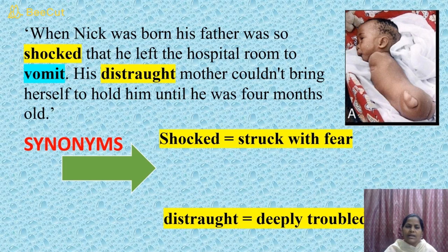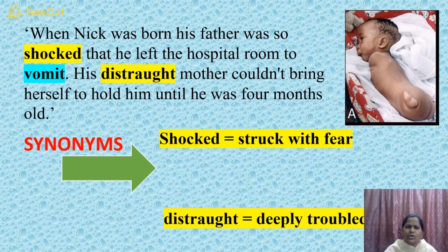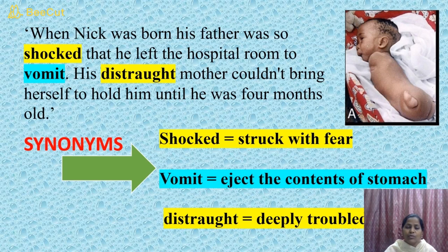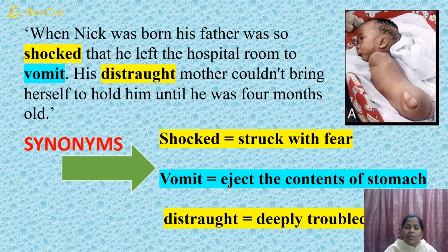Look at the meaning of the words 'shocked' — struck with fear — and 'vomit' — to eject the contents of the stomach. When Nick was born, his father was so shocked. Why should a father be shocked when a child is born? He left the hospital room to vomit, meaning what he had eaten came out of his mouth because he could not digest looking at newly born baby Nick.